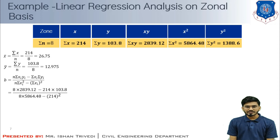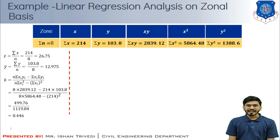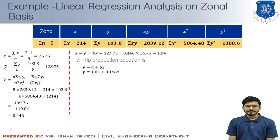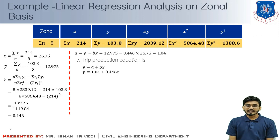Using the known values, x̄ = σx/n = 214/8 = 26.75. ȳ = σy/n = 103.8/8 = 12.975. The multiplying constant b = (n·σxi·yi − σxi·σyi) / (n·σxi² − (σxi)²) = 0.446. The additive constant a = ȳ − b·x̄ = 1.04. With these values, the trip-generating equation is y = 1.04 + 0.446x.